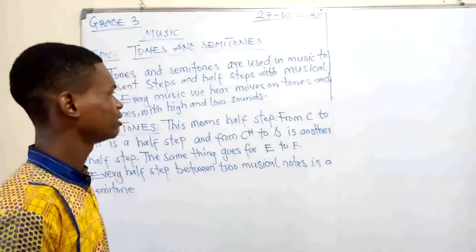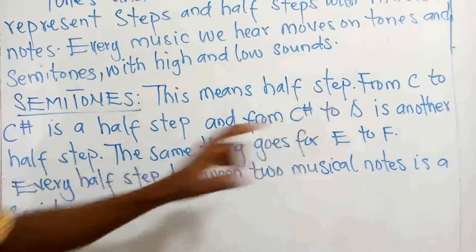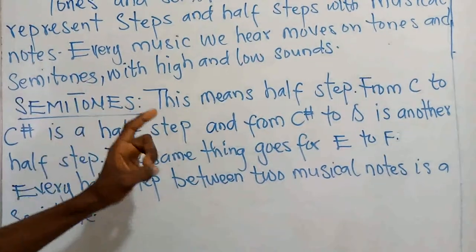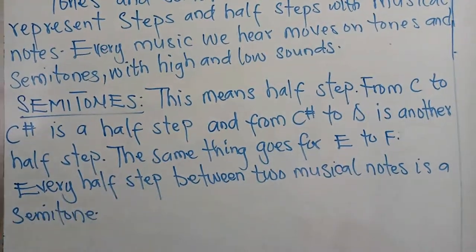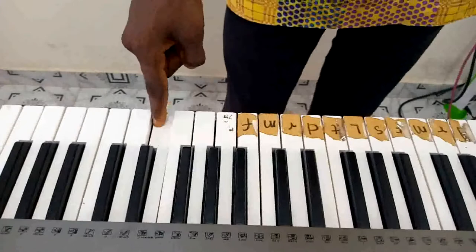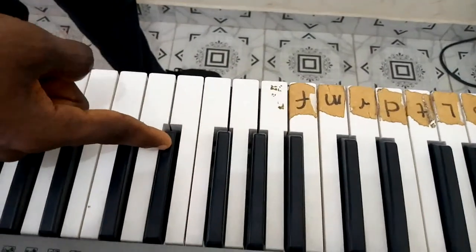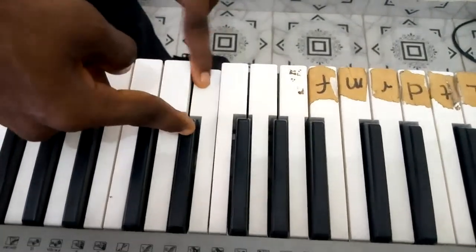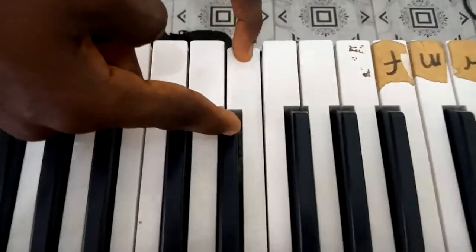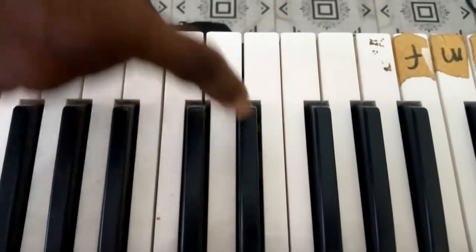Now we'll talk about semitones first. A semitone means half step. From C to C sharp is a half step, and from C sharp to D is another half step. On the keyboard, this is our C. From C to C sharp is a half step because there is no space between these two notes — if you press both of them down at the same time, you will find that there is no space that divides them. So from C to C sharp is a half step, and from C sharp to D is another half step.